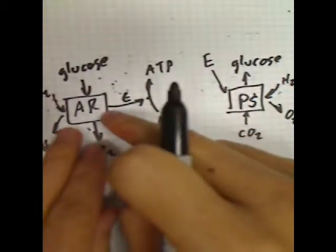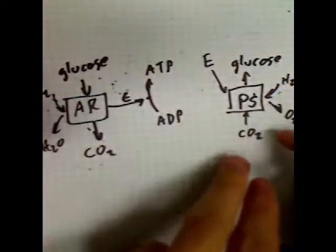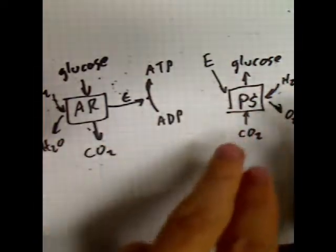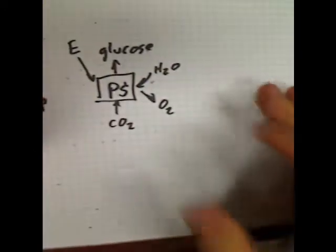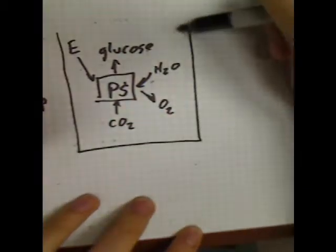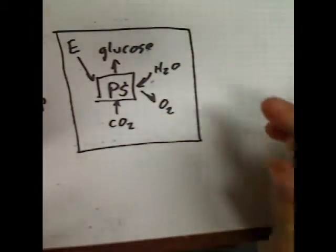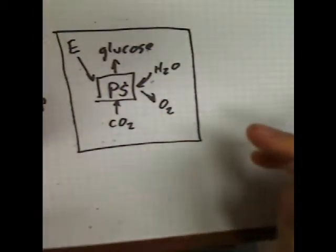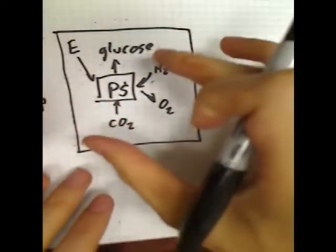They're sort of opposites of each other: what goes into respiration is what comes out of photosynthesis, and what comes out of respiration is what goes into photosynthesis. This is the big picture of photosynthesis. Understand this before you understand it in greater detail — understand what goes in and what comes out.